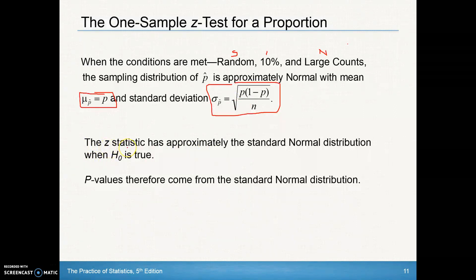The z-statistic, when you calculate that z-statistic, that test statistic, it has approximately the standard normal distribution when the null is true. And then, therefore, our p-values come from the standard normal distribution.